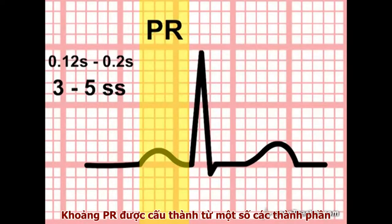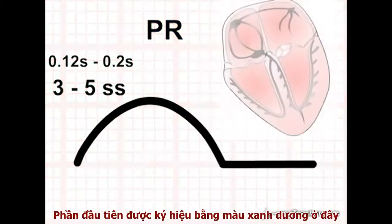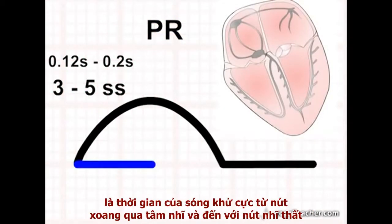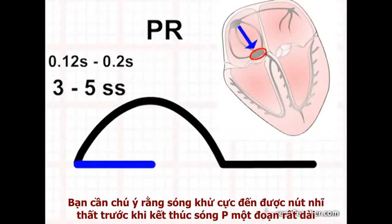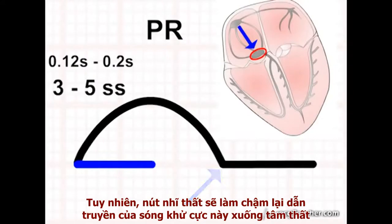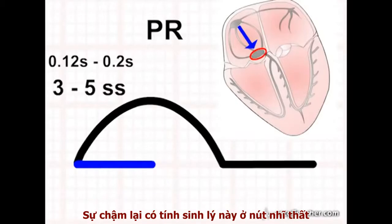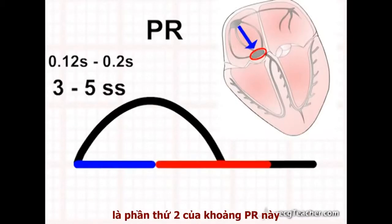The PR interval is made up of a number of elements. The first component, represented here in blue, is the time taken for the depolarisation wave — normally generated from the SA node — to traverse the atria and reach the AV node. You will notice that depolarisation reaches the AV node well before the end of the P wave. However, the AV node delays the transit of the impulse into the ventricles, and this physiological delay in the AV node is the second major component of the PR interval.